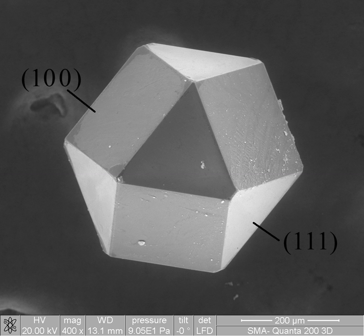Microstructure is defined as the structure of a prepared surface or thin foil of material as revealed by a microscope above 25 times magnification. It deals with objects from 100 nm to a few cm. The microstructure of a material, which can be broadly classified into metallic, polymeric, ceramic and composite, can strongly influence physical properties such as strength, toughness, ductility, hardness, corrosion resistance, high/low temperature behavior, wear resistance, and so on.